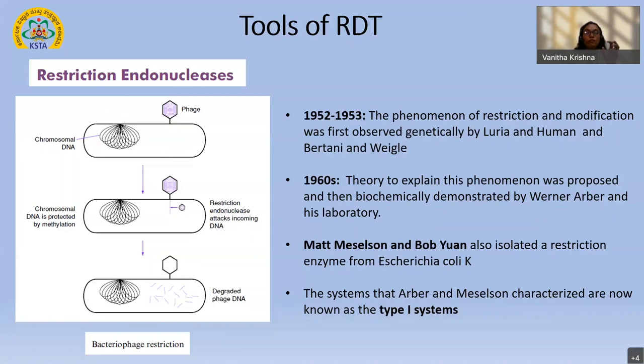How was E. coli K able to restrict the phage infection? The host chromosome generates an enzyme called restriction endonucleases, which attacks the phage DNA and breaks it down into smaller pieces. 'Nucleases' means enzymes which cleave nucleic acid. 'Endo' means it cleaves within the sequences, whereas 'exo' means cleavage at terminal regions of a nucleic acid. That is how the discovery of restriction endonucleases actually took place.